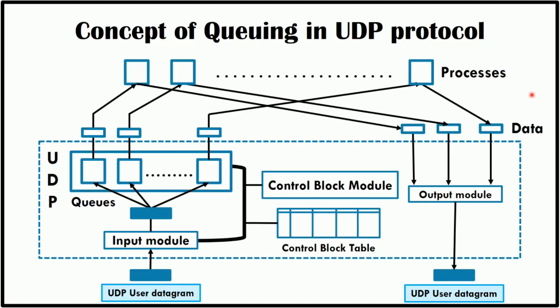In the UDP protocol, port numbers are used to distinguish the processes running on the server and client side. UDP provides process-to-process communication. The client generates the process that needs services, while the server generates processes that provide services. Queues are open for server and client processes — two queues for each process: incoming queues which receive messages, and outgoing queues which send messages. The queues function as long as the process is running, and when the process is terminated the queues are destroyed.